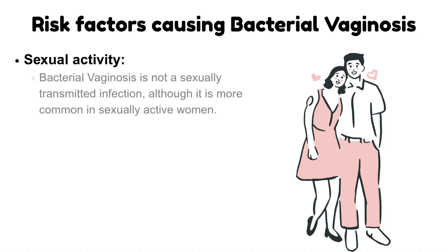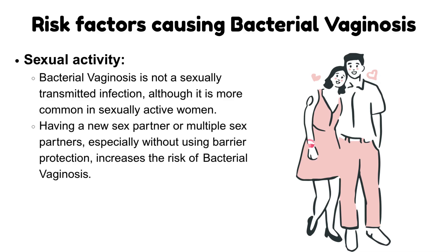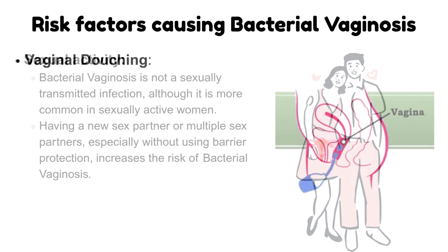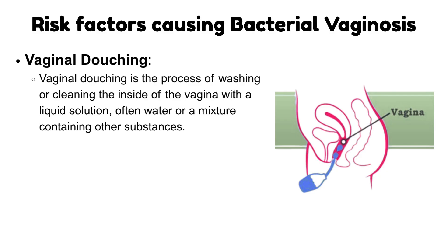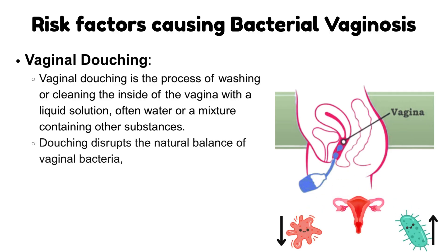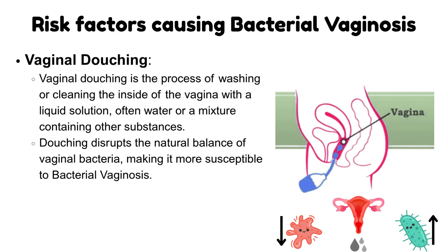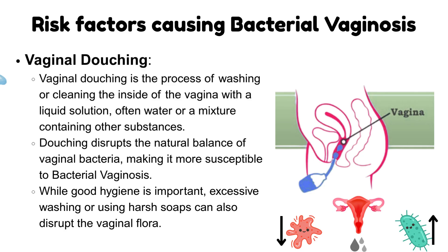Sexual activity: bacterial vaginosis is not a sexually transmitted infection, although it is more common in sexually active women. Having a new sex partner or multiple sex partners, especially without using barrier protection, increases the risk. Vaginal douching — washing the inside of the vagina with a liquid solution — disrupts the natural balance of vaginal bacteria, making it more susceptible. Excessive washing or using harsh soaps can also disrupt vaginal flora.